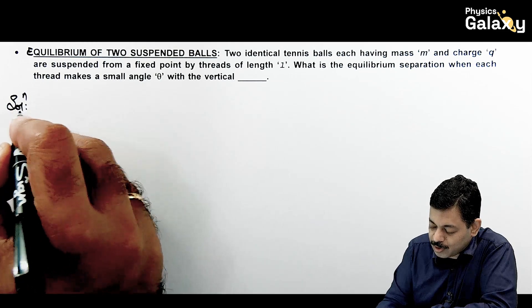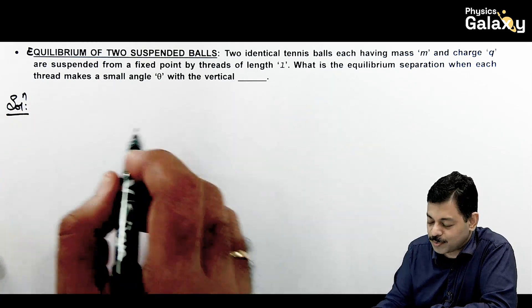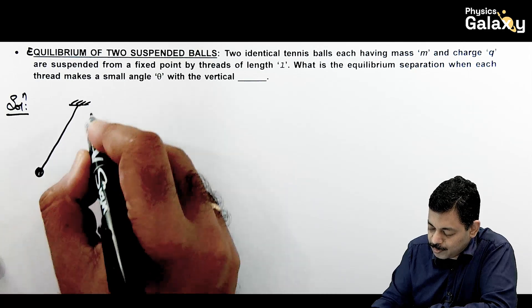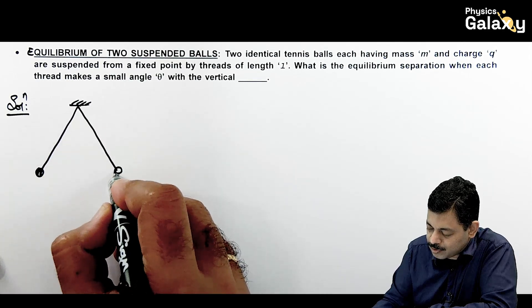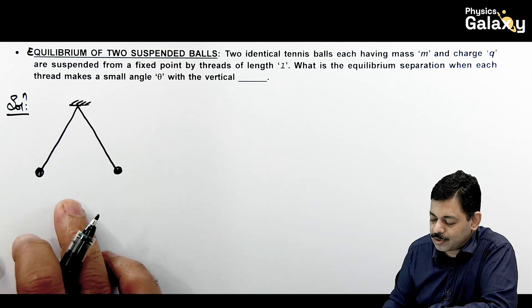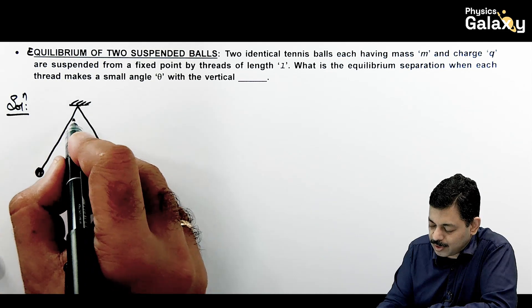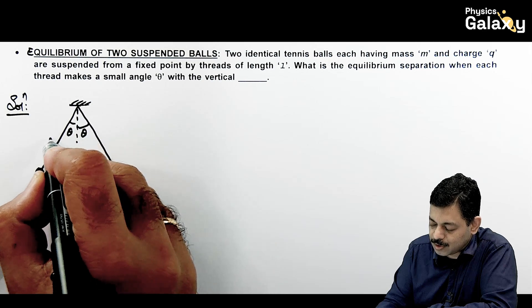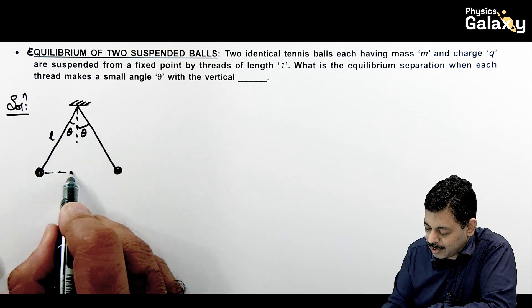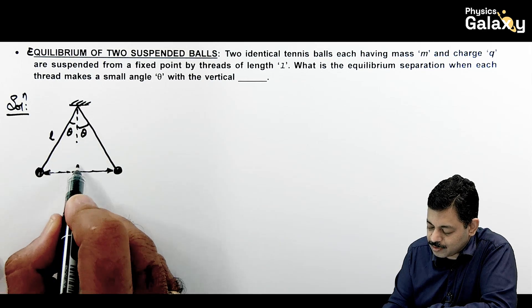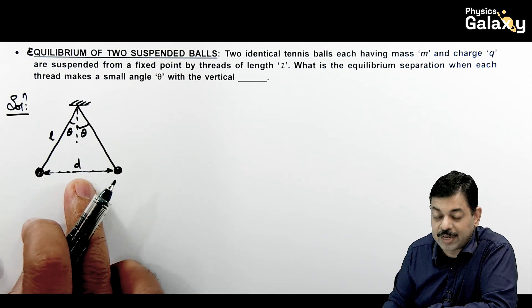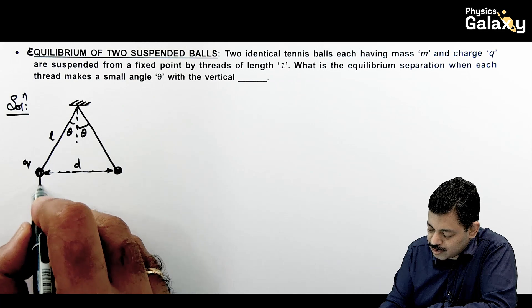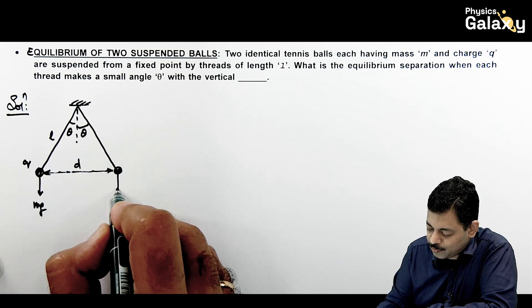So if we draw the situation here, we will suspend two balls from one point. The situation would be like this. Due to mutual repulsion, they are suspended at an angle with each other. Now in this situation, the threads are making a small angle theta with the vertical. So in this situation, this is theta and here this is also theta. Length of string is L and the equilibrium separation if we consider this is D. So we have to find this D's value.